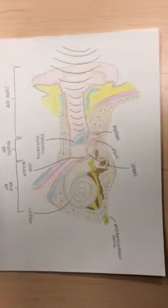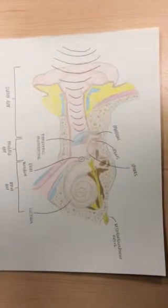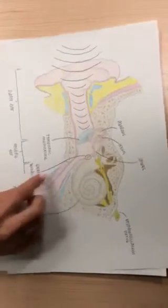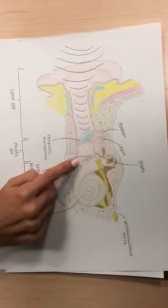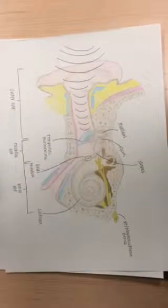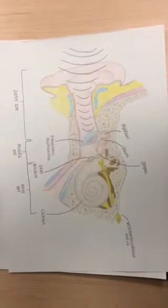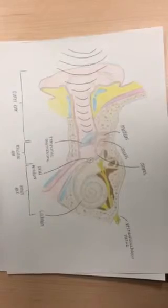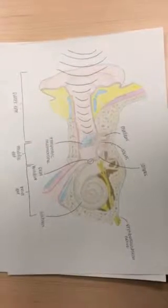The stapes vibrates a small membrane at the base of the cochlea, known as the oval window. This transmits vibration energy to the fluids of the cochlea, the perilymph and the endolymph.